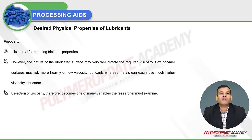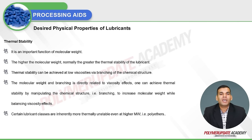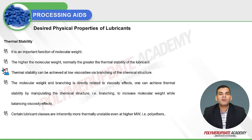Soft polymer surfaces, like EVA, rely more heavily on low viscosity lubricants, whereas hard materials like metals can use much higher viscosity lubricants. The next desirable physical property is thermal stability, which is an important function of molecular weight — the higher the molecular weight, normally the greater the thermal stability of the lubricant. Thermal stability can also be achieved at low viscosities via branching of the chemical structure.